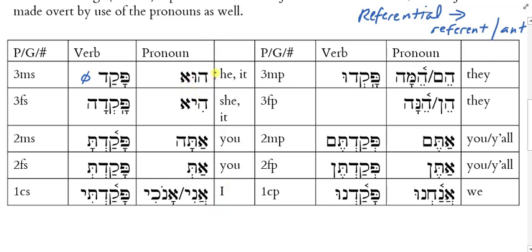Do we mark gender for third person singular? Yes — they are different forms for 'he' and 'she.' What about 'you'? Also different — that's why we have 2ms and 2fs. Notice the forms for 'I' are common singular, so it doesn't matter whether I'm Sarah or Murray — I still use ani or anochi. Don't get the impression that one of these is masculine and one's feminine; that's not the case. Now look at the words for 'they' — there are two forms. The masculine plural form is hem, and there's an alternate form hema.